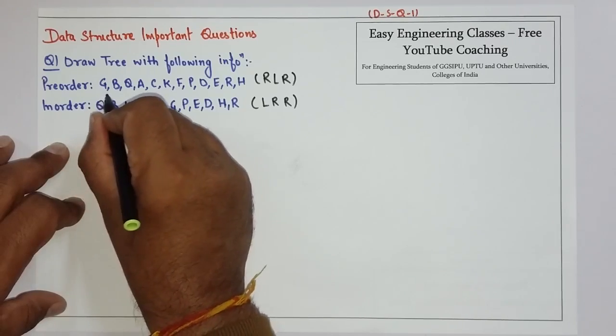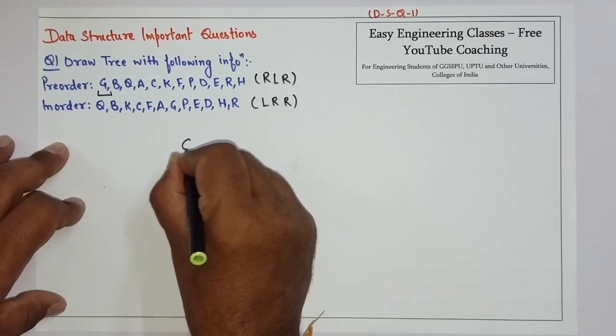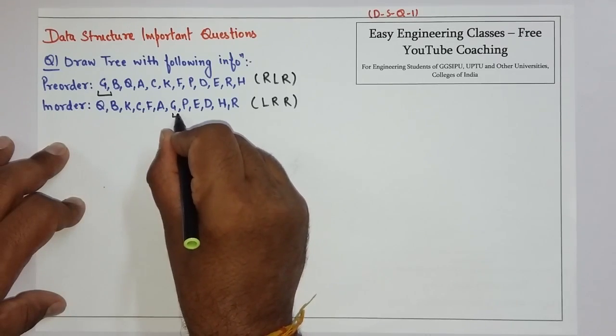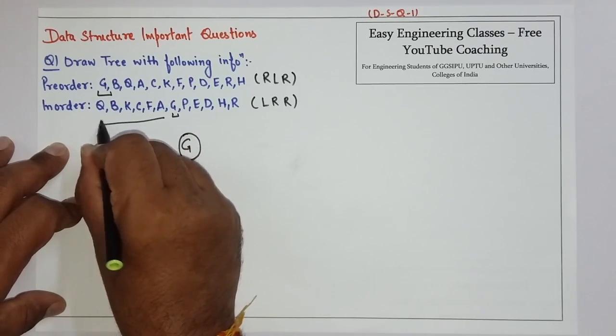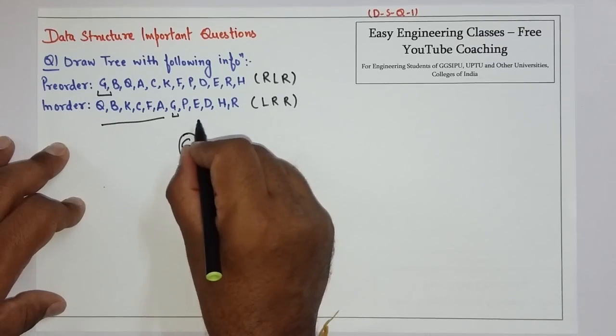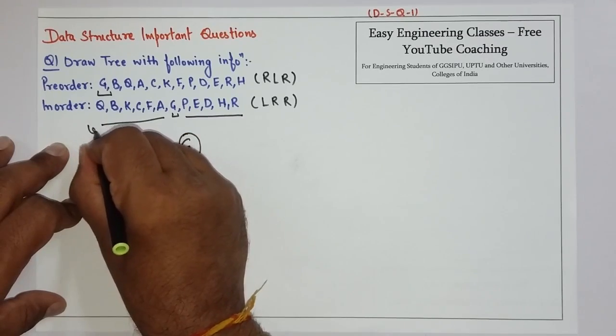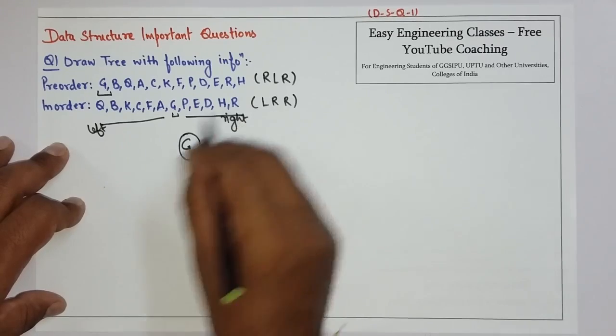The first element of pre-order is the root. So G is the root element. By seeing the location of G in order, we can say that all elements to the left of G are part of the left tree and all elements to the right of G are part of the right tree.